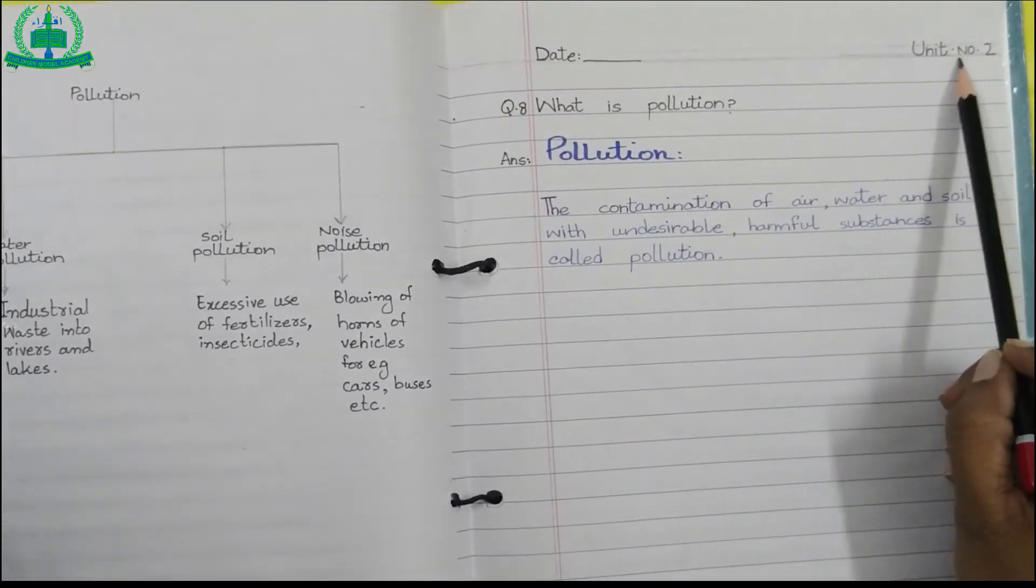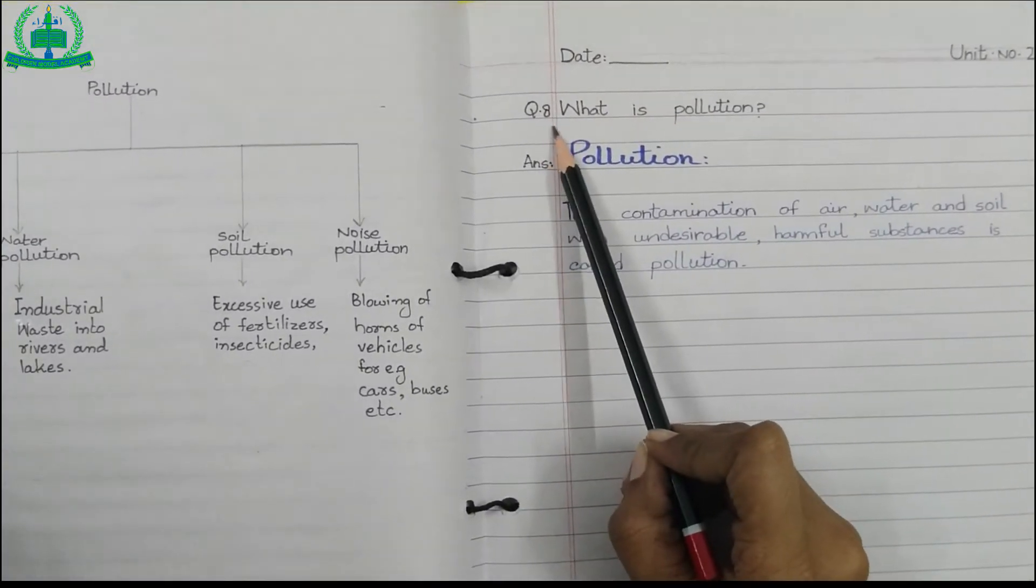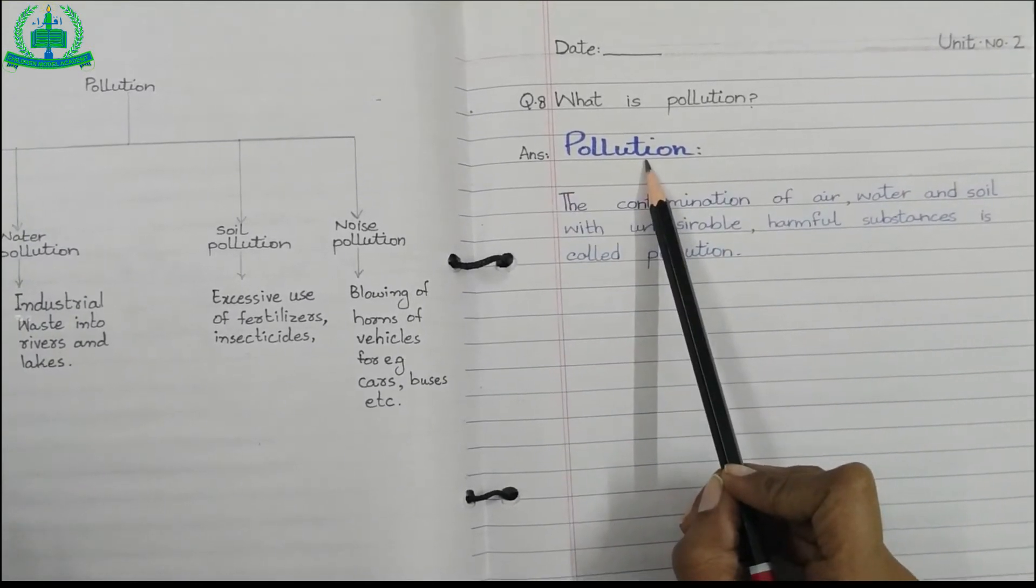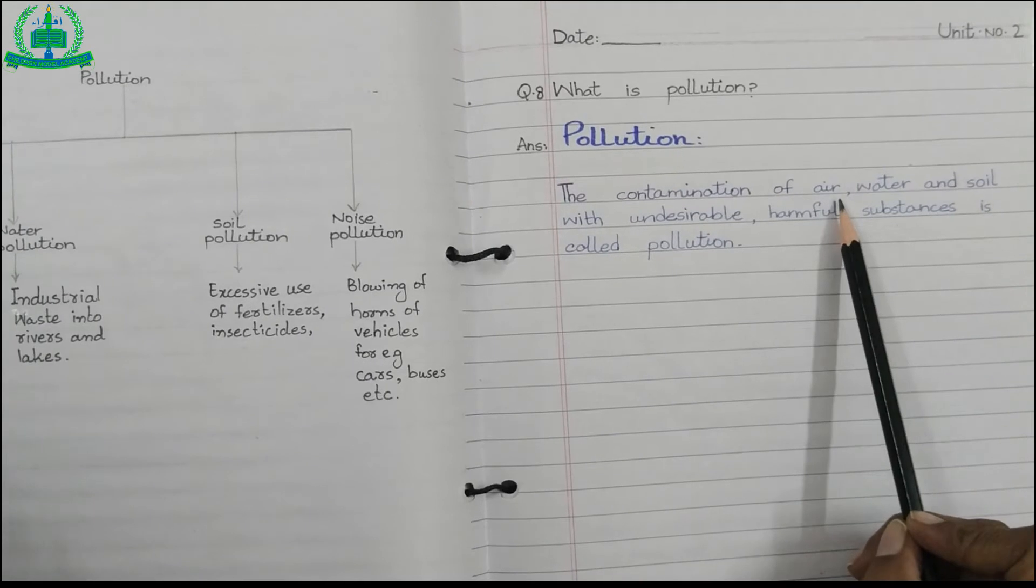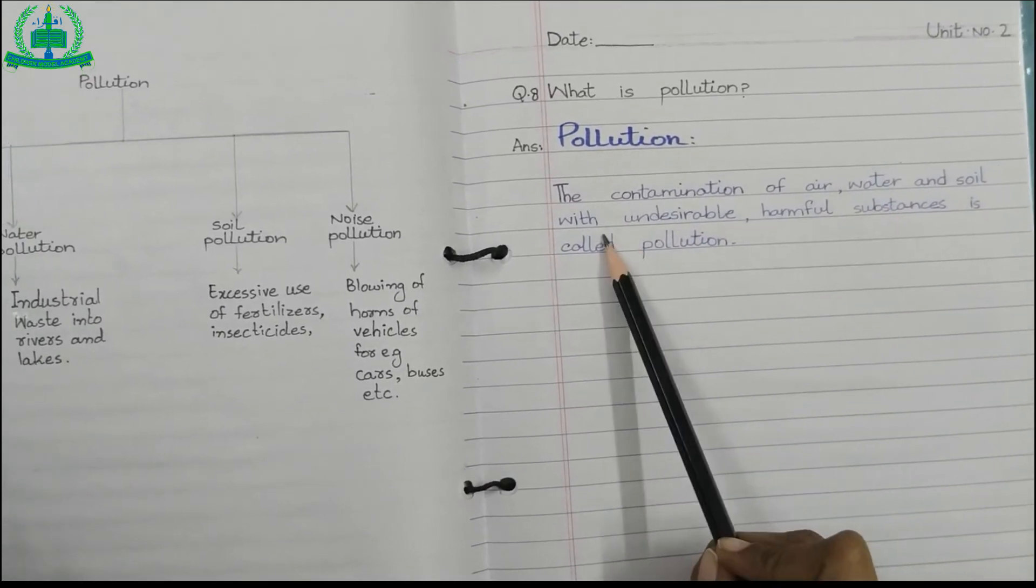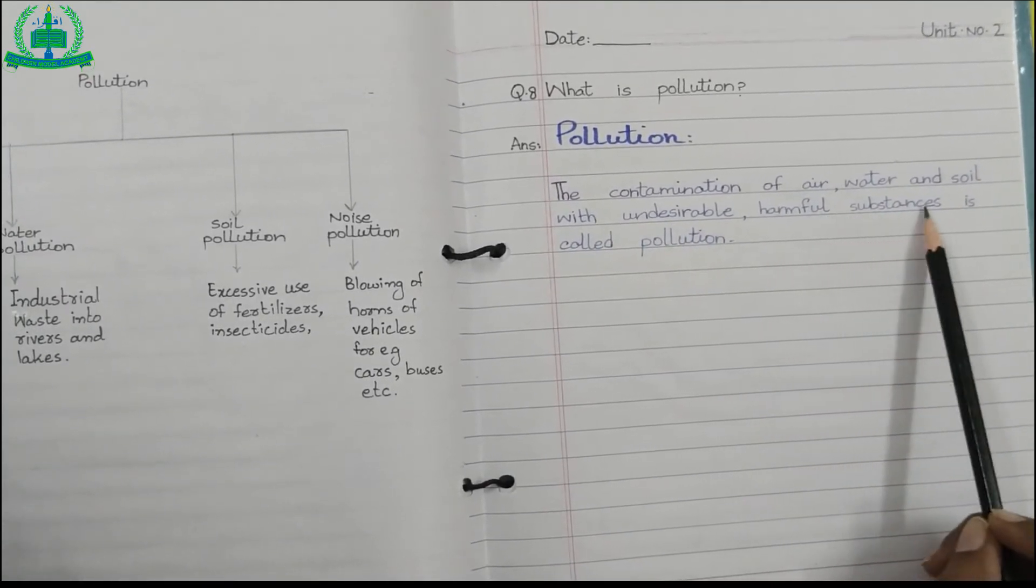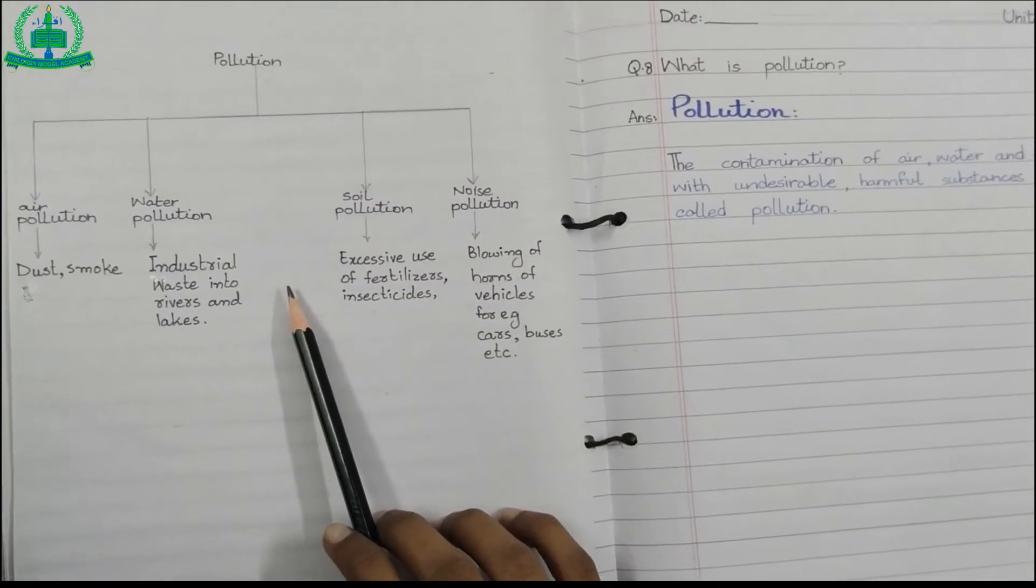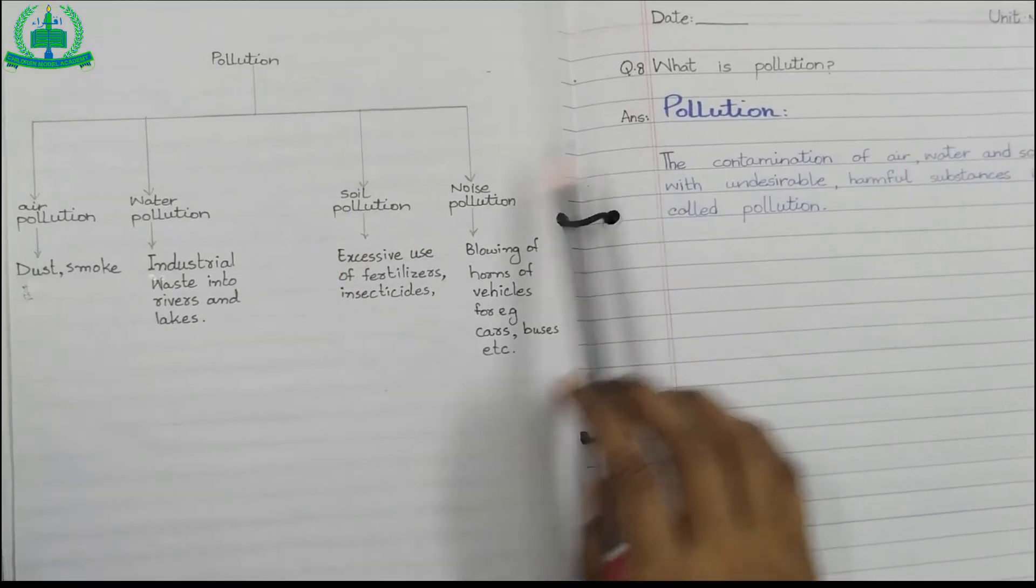Now open your science journal. Mention date, unit number two. Question number eight: What is pollution? Answer: The contamination of air, water, and soil with undesirable harmful substances is called pollution. Make a chart of pollution next to question number eight.